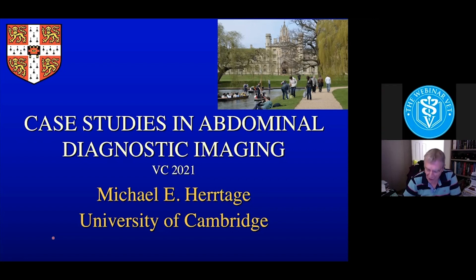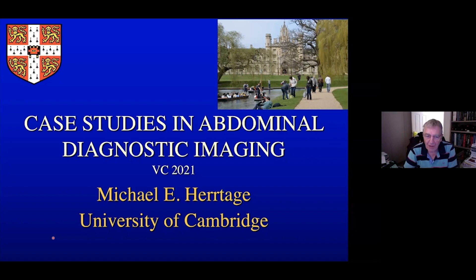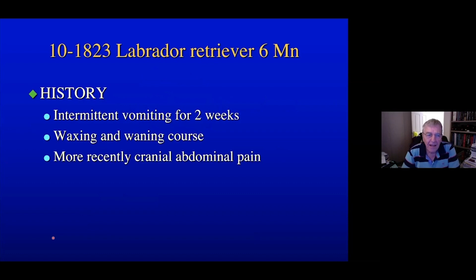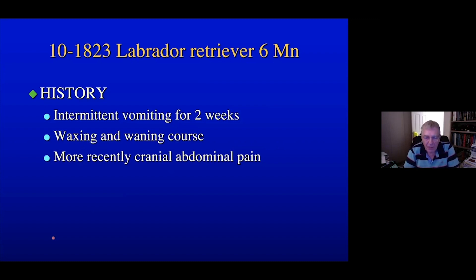Thanks everyone for rejoining this final session for me on abdominal imaging. The first case we're going to present is a Labrador retriever, six-year-old male neutered called Galaxy. The history with Galaxy is that he had been intermittently vomiting for about two weeks, waxing and waning but becoming more continuous, and more recently associated with cranial abdominal pain.